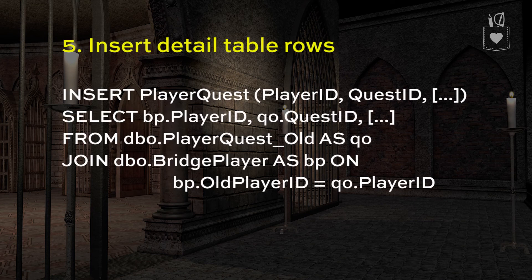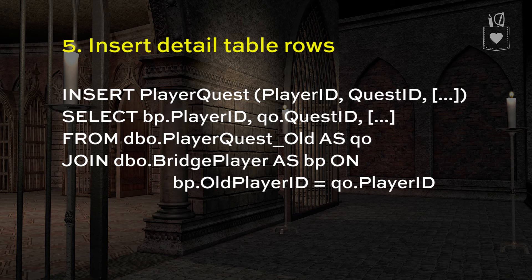The last step is to insert the detail table rows. We would insert into the player quest table using the bridge player ID — which is the new player ID — and the old quest ID. We would join the player quest old table to the bridge player table on the old player ID. It sounds more complicated than it really is. Once you've got it built, it will seem fairly straightforward, and you can repeat this process with every detail table.